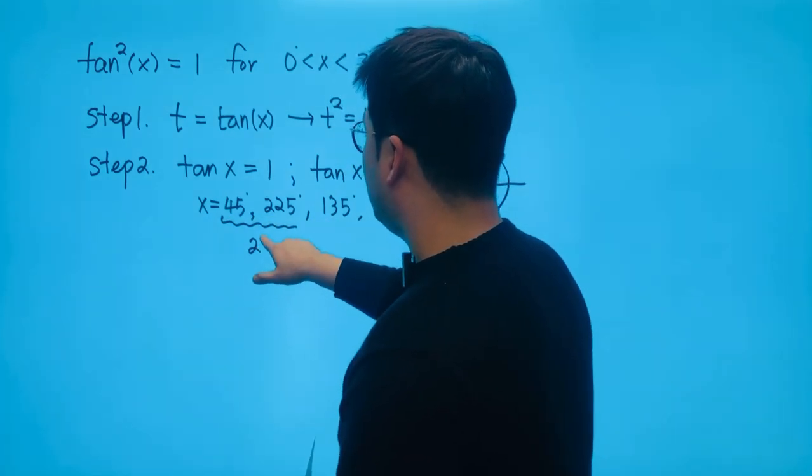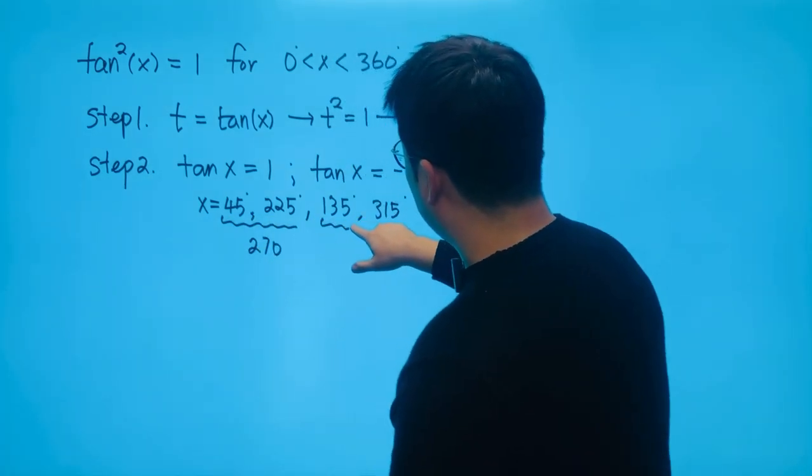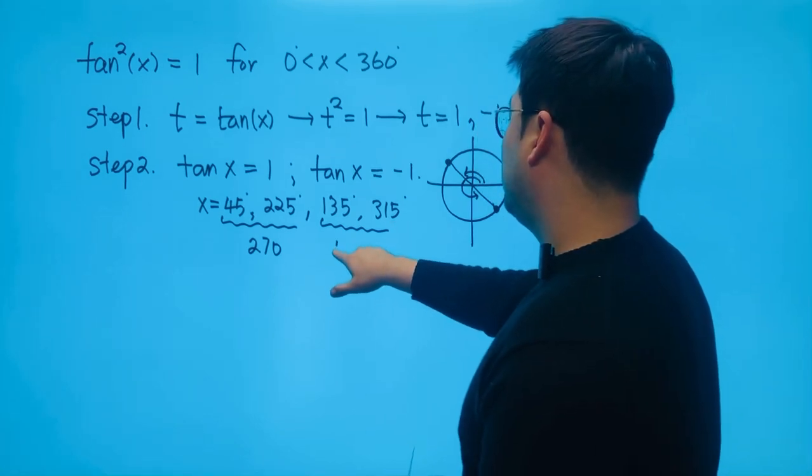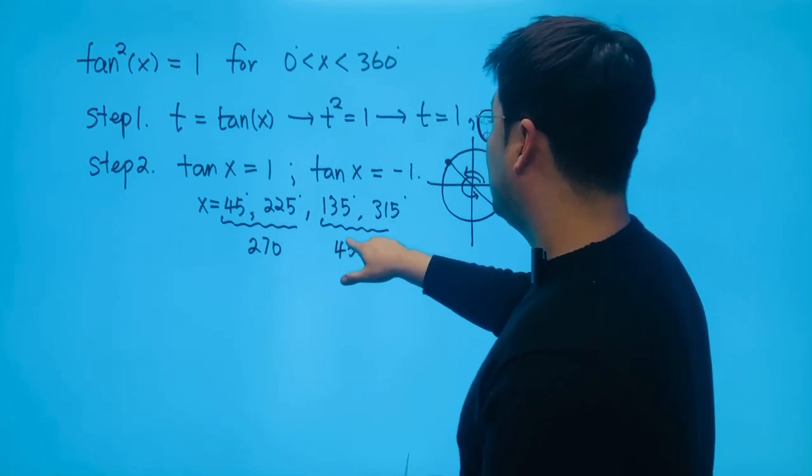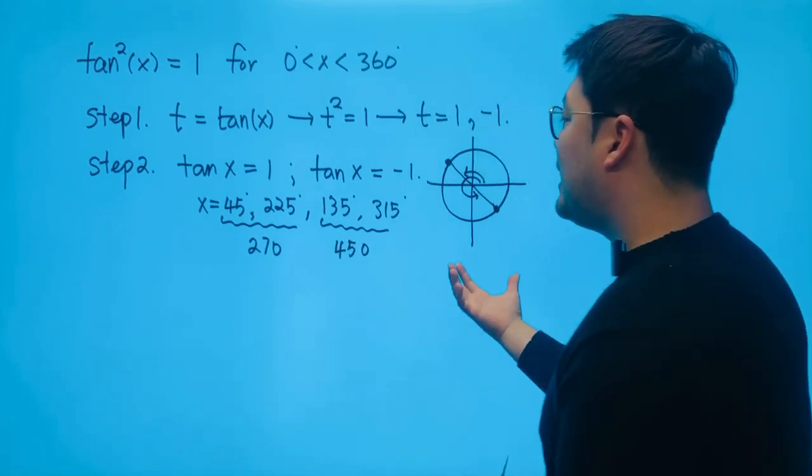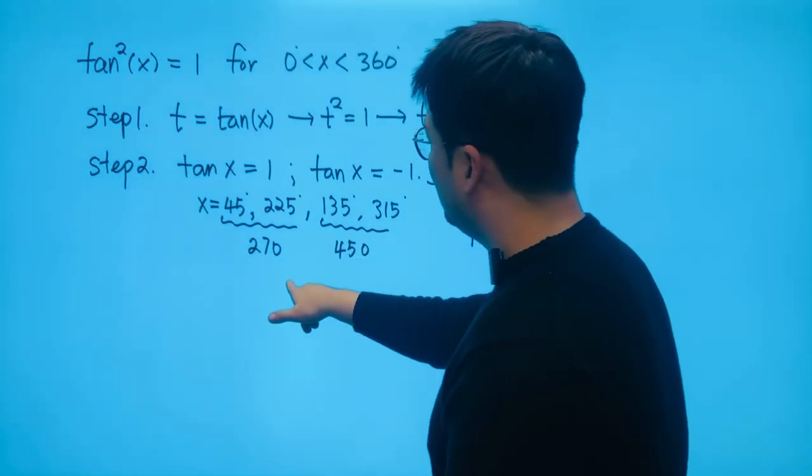That becomes 270. And of course, adding these two numbers up, it becomes 450. So adding these up all together becomes 720.